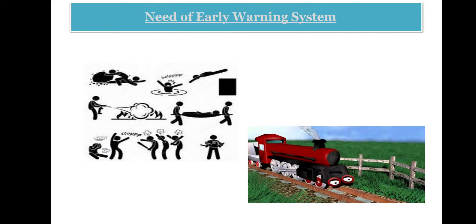The need for early warning systems: early warning for disaster reduction is mandatory for public policy at the highest national level for two main reasons. First, public safety and the protection of human lives is most important. Second, the protection of the nation's resource base and productive assets.